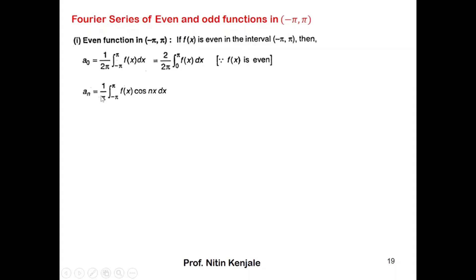And aₙ, whose expression is 1 over pi times the integral of f(x) cos(nx) dx from minus pi to pi, becomes 1 over pi times 2 times the integral of f(x) cos(nx) dx from 0 to pi. This is because f(x) is even and cos(nx) is also even, so their product f(x) cos(nx) is an even function. Therefore, the integral of an even function over minus a to a can be written as twice the integral from 0 to pi.